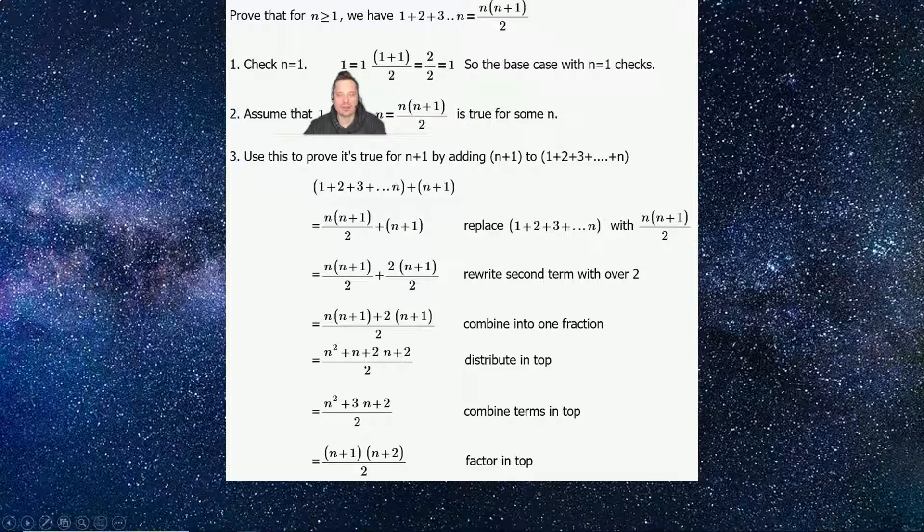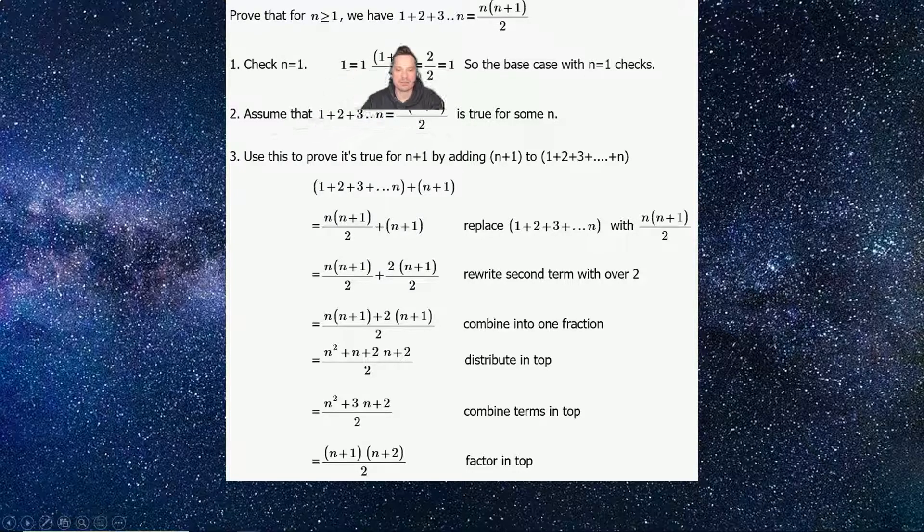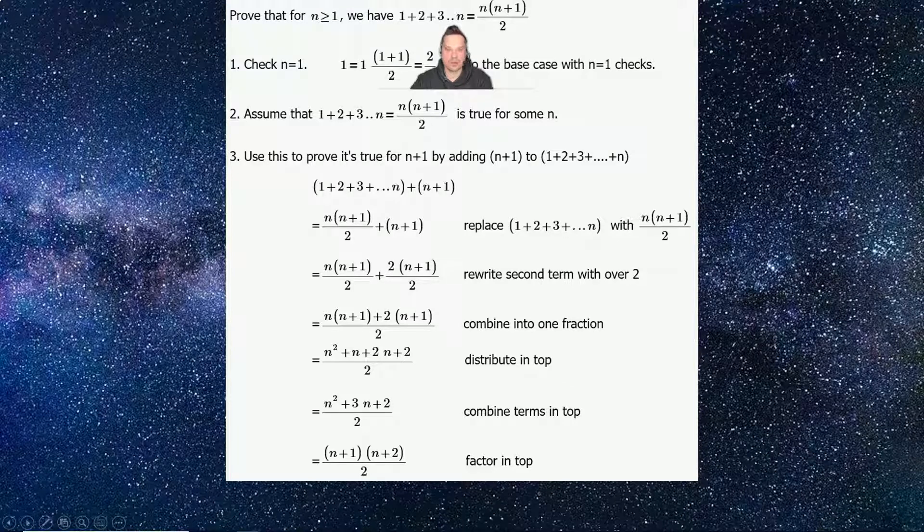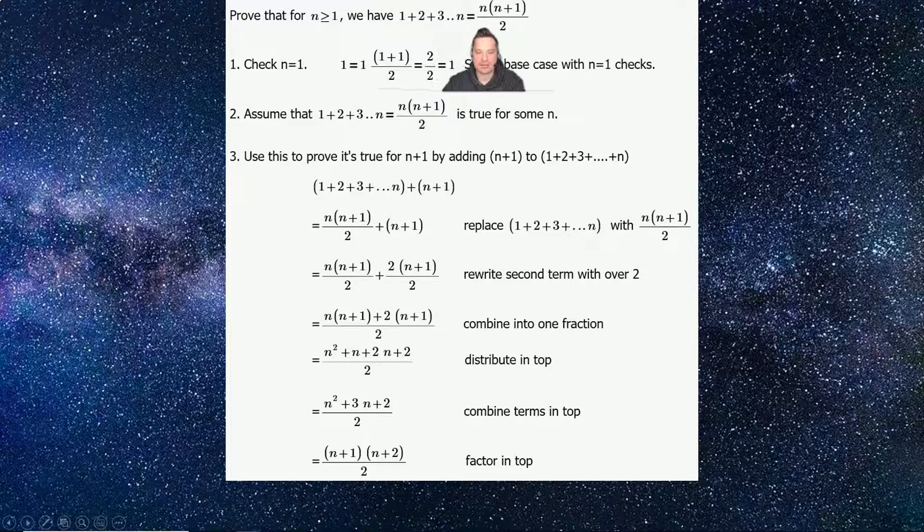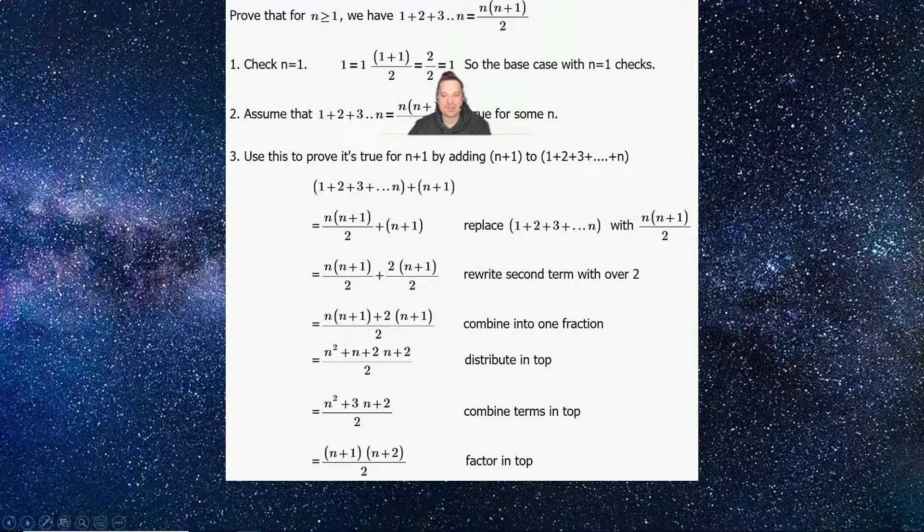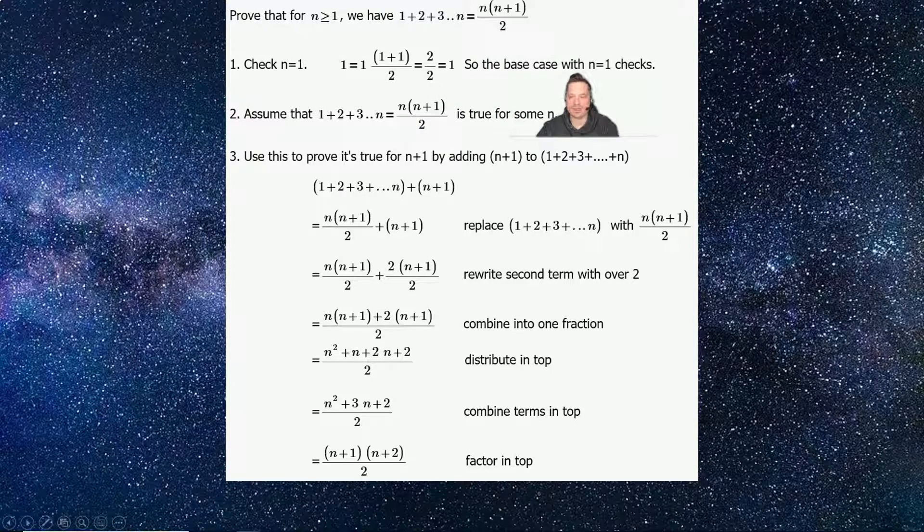When n has the value 1, the left side, that means 1 plus 2 plus 3 all the way to n, but when n has the value 1 that is 1, that is equal to the value of that formula on the right side, which is also equal to 1. That's what it means to say that the base case checks when n has the value 1.